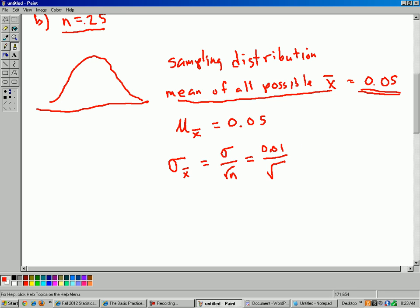And square root of n, well, n is 25, so square root 25. The author was very kind to us to make our number a perfect square, so square root of 25 is just 5. Don't need a calculator for that. And then 0.01 divided by 5 would be 0.002.